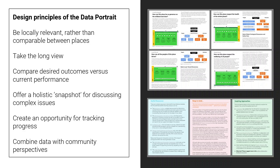Combine data with community perspectives. The data portrait will be richly enhanced by bringing together with the data people's sense of their place through stories, lived experience, and other sources of community information. These layers could be combined simultaneously, or one before and another after, or whatever makes the most sense in your place, depending on your context and the time, resources, and expertise available.